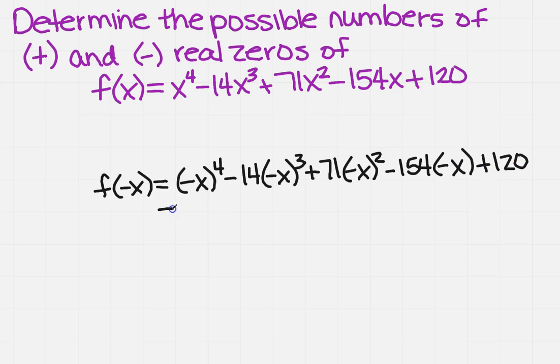And then I want to actually simplify this. So this is to the fourth power, so it's positive. This is to the odd power, so it's negative. So negative times a negative is a positive. Then I've got negative x squared, that's a positive, so it's still going to be a positive. And then I've got a negative times a negative, that's going to be a positive. And then I've got my number hanging out.